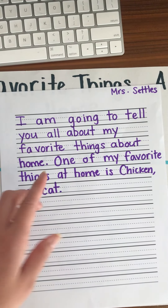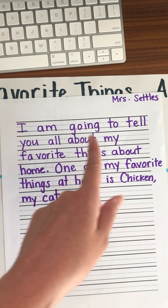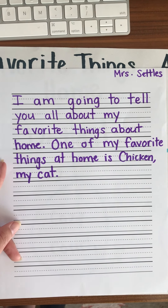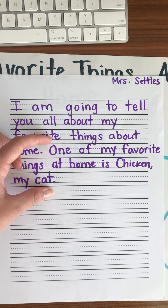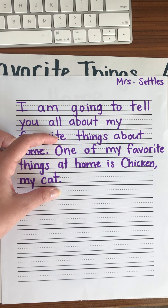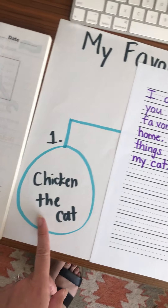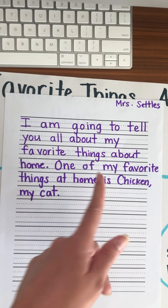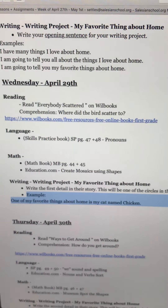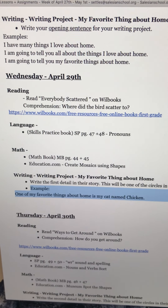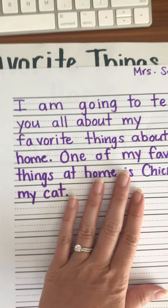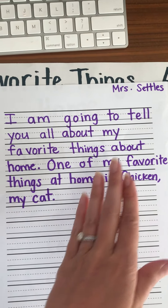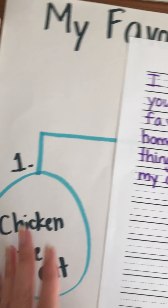So for mine, I had the topic sentence: 'I'm going to tell you all about my favorite things about home.' And then my first detail will say, 'One of my favorite things at home is Chicken, my cat,' using that detail to help write that. There is another example right here on the lesson plan, so you can see that too. There's more than one way to write this, so feel free to let them be creative with how they want to write their first detail.